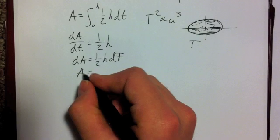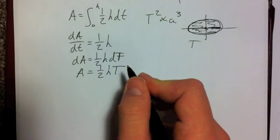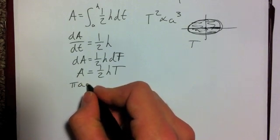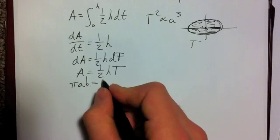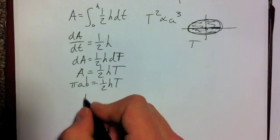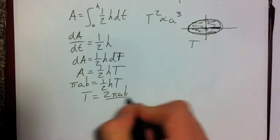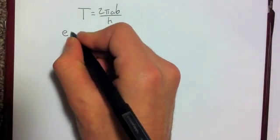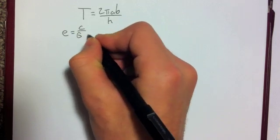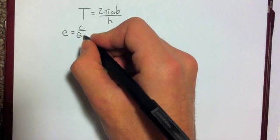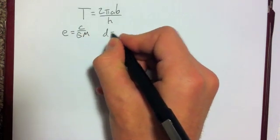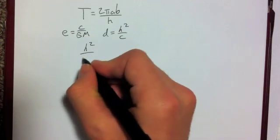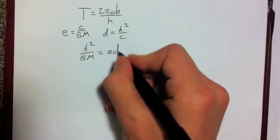So A equals ½hT. From previous lessons, the area of an ellipse equals π times the semi-major axis a times the semi-minor axis b, so πab equals ½hT. Rearranging for the period gives T equals 2πab over h. From the proof of Kepler's first law, we were given that the eccentricity e equals c over GM (the universal gravitational constant times the mass of the sun), and d equals h²/c, so h²/GM equals ed.